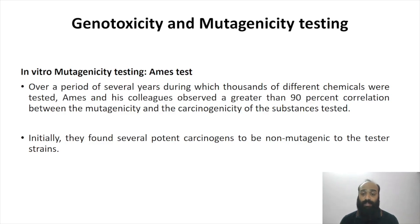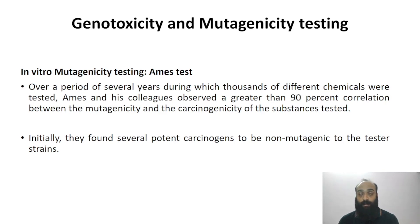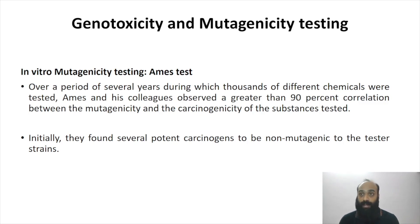Using the Ames test, a large number of chemicals can be tested for mutagenicity. Scientists can pass this information to regulatory bodies, which can then issue guidelines on how these chemicals should be used — for example, acceptable daily intake levels for food additives. All such chemicals need to be tested before they reach the general public, and the Ames test is one of those screening tests.